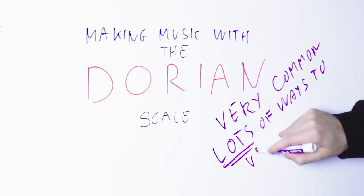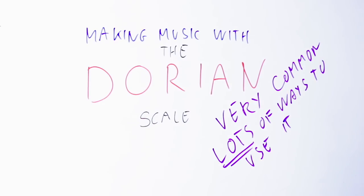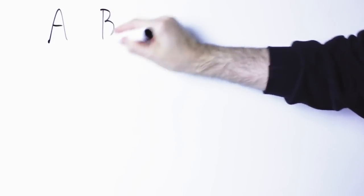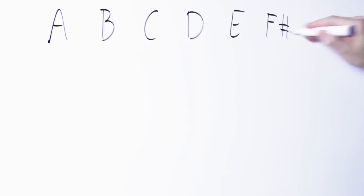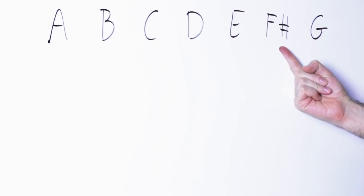It can be used in thousands of different ways, so here we have to limit ourselves only to a few examples, otherwise this video will be incredibly long. Now the Dorian scale is made by the notes A B C D E F sharp G. It's very similar to an A natural minor scale except for the sixth note that is an F sharp rather than an F.